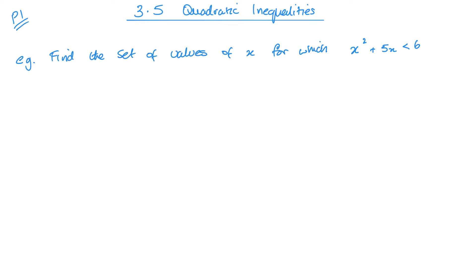So say I have this inequality here: x squared plus 5x is less than 6. What I want to do is first turn it into an equals and make it equal 0. So x squared plus 5x equals 6, which becomes x squared plus 5x minus 6 equals 0.